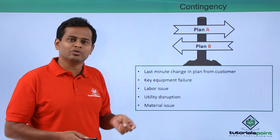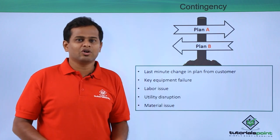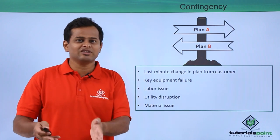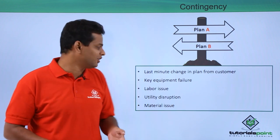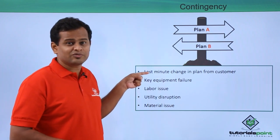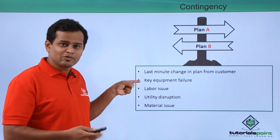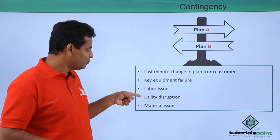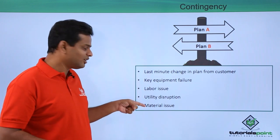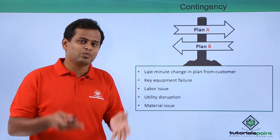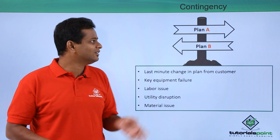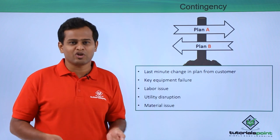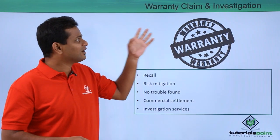From a contingency point of view, there should always be a Plan B, because change is the only constant. Changes can arise from any parameter on any day — last-minute changes from the customer, key equipment failure, labor issues, main utility equipment disruption, and material issues. There should always be a Plan B mechanism so that customer satisfaction is not compromised.